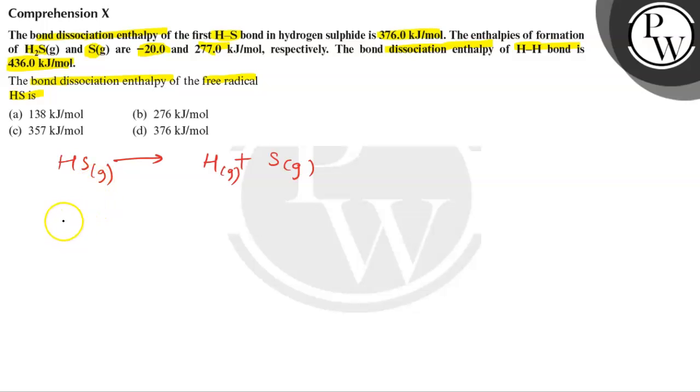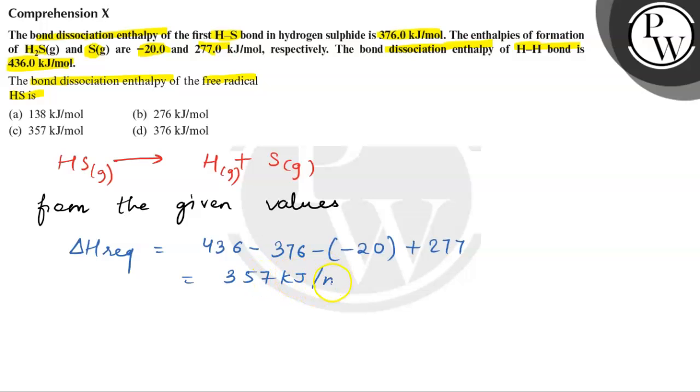From the given values, delta H required will be equal to 436 minus 376 minus (-20) plus 277, that will be equal to 357 kJ per mole.